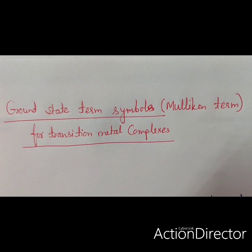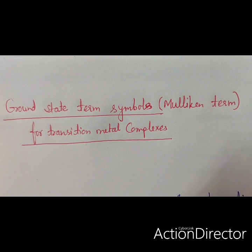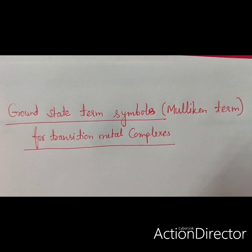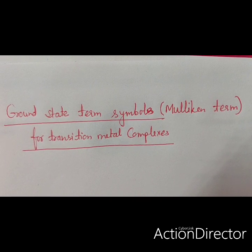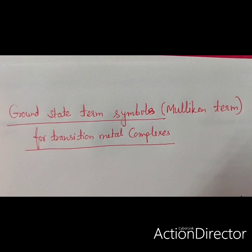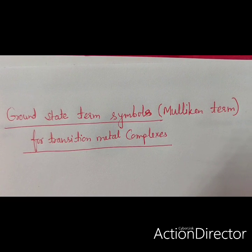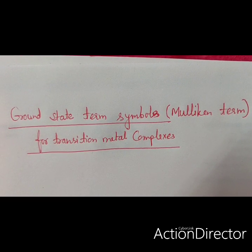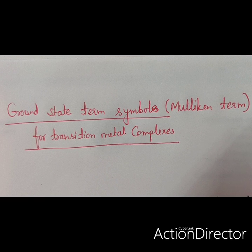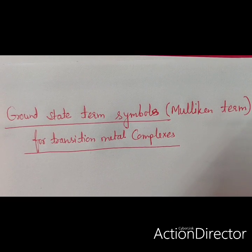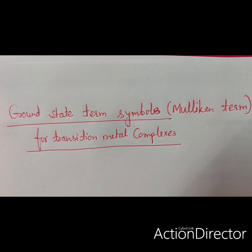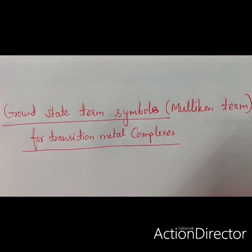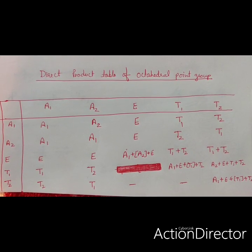Dear students, the topic of this lecture is the determination of ground state term symbols for transition metal complexes. For transition metal complexes, the term symbols are known as Mulliken terms — molecular terms. Atomic terms we have already discussed in the previous lecture. In this lecture we will calculate the ground state term for transition metal complexes, which will be very useful to draw or plot the Tanabe-Sugano diagrams.